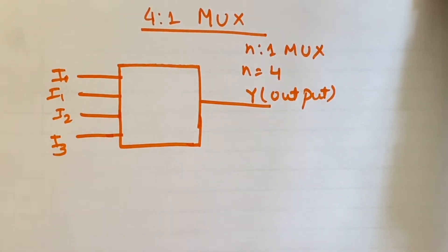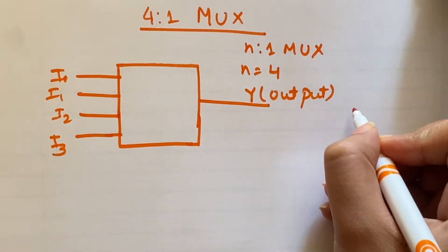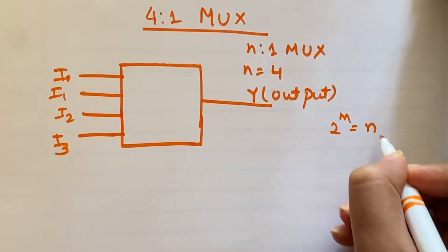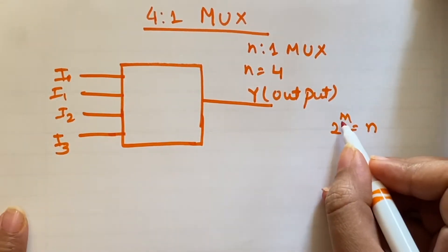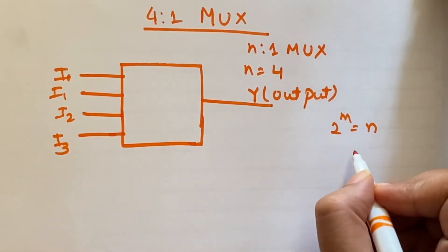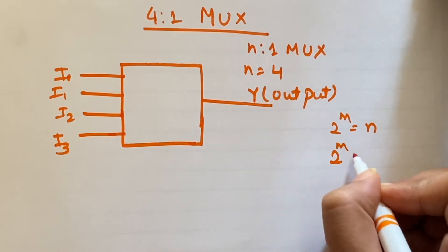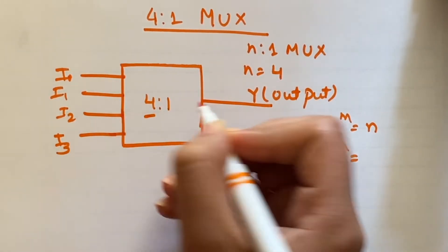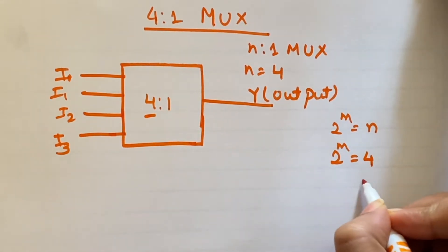So for the select lines we have the relation 2 to the power m equal to n, where n is the number of inputs and m is the number of select lines. So here 2 to the power m equal to n is equal to 4. This is the n, 4, which is 2 to the power 2.